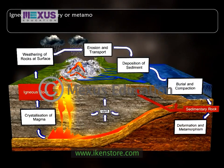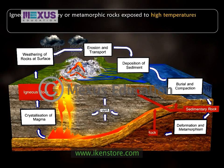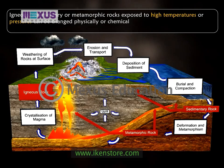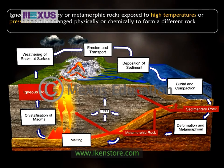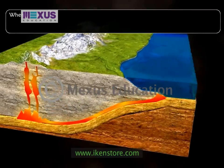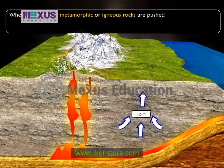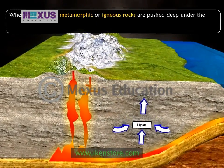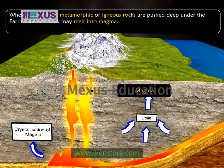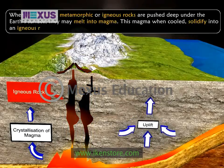Igneous, sedimentary, or metamorphic rocks exposed to high temperatures or pressures can be changed physically or chemically to form a different rock called metamorphic rock. When sedimentary, metamorphic, or igneous rocks are pushed deep under the earth's surface, they may melt into magma. This magma, when cooled, solidifies into an igneous rock.